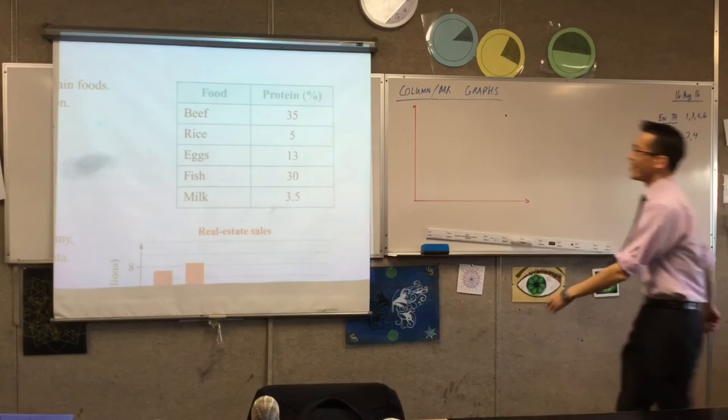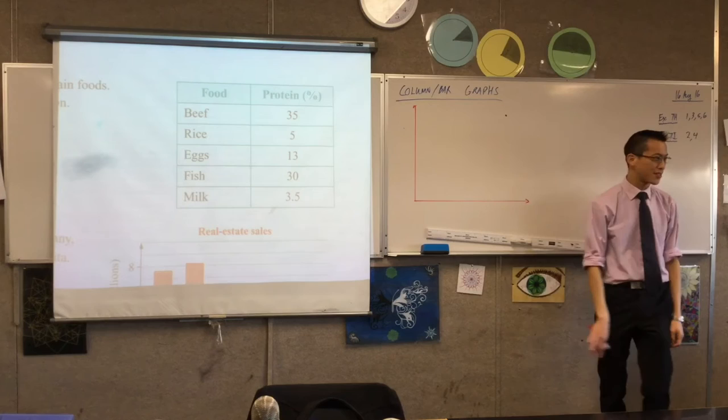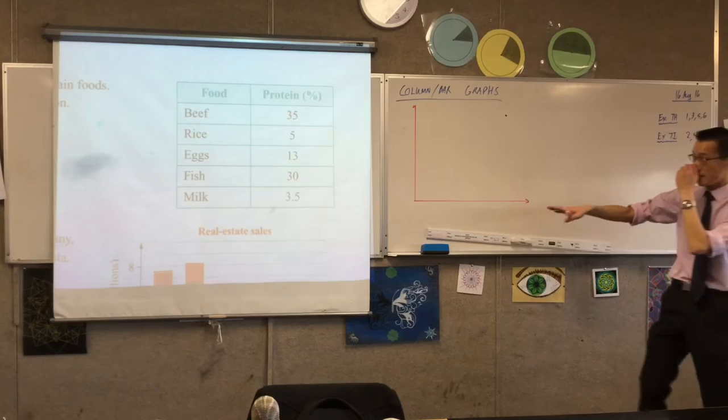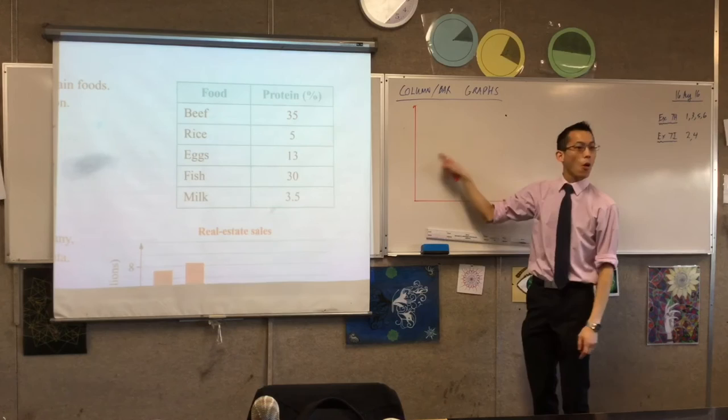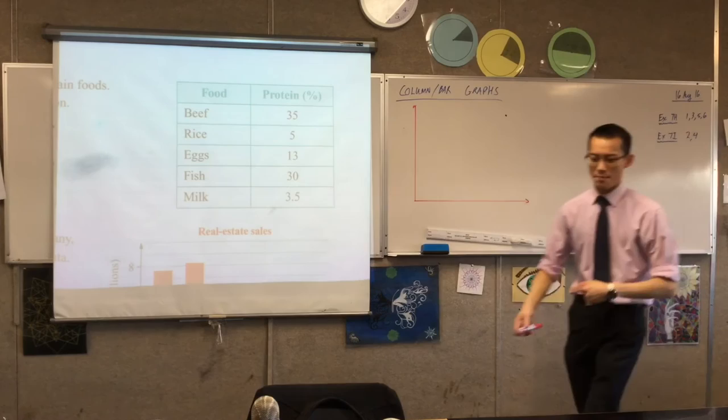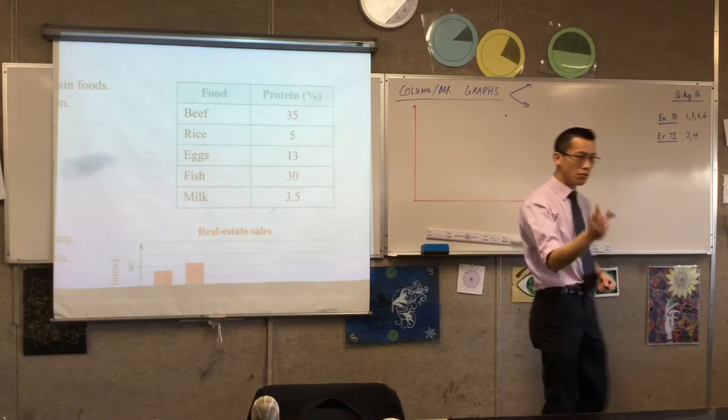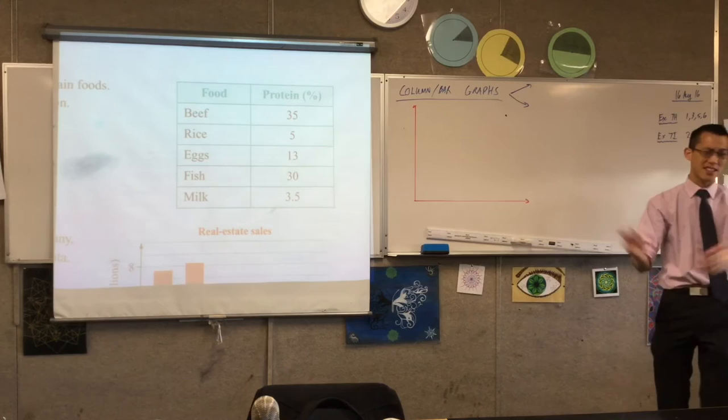Now I've got my nice, orderly axes. The first thing I want to do, before I say what's going on here, is decide which axis is which. A column or bar graph — you can set it up horizontally so all your bars go across, or you can set it up vertically. In some senses it doesn't really matter, but I will point out there are two kinds of data you very frequently see presented one way or the other.